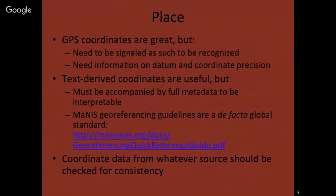For place, GPS coordinates are great but not enough — they need to be flagged as having been collected with a GPS unit, otherwise we might miss that they are GPS-quality coordinates. We also need information on the datum and precision to make them fully useful. Text-derived coordinates must be accompanied by full metadata; look at the MANIS georeferencing guidelines as the de facto global standard. Coordinate data, whatever the source, should be checked for consistency.